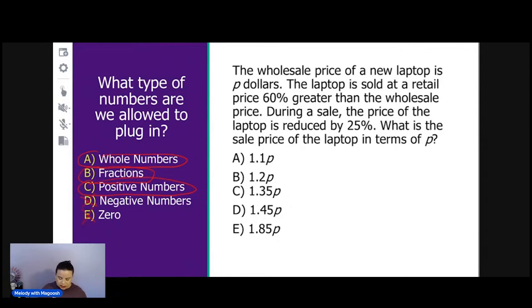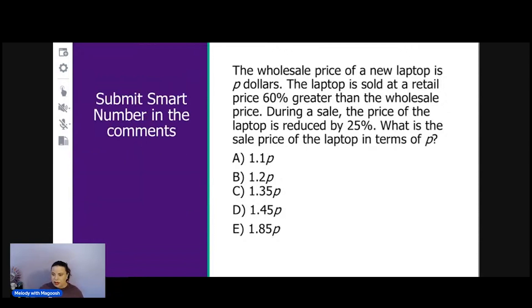But we want to pick a smart number. We want to pick a number that is going to make this problem easy for us to work with. There was a clue for what to choose when we work with percents. So take a moment and pick out what number you think would be a good idea to use. Since we're working with percents, a very convenient number to use would be a multiple of 100. In fact, I'm going to use 100 itself. So my smart number is going to be that p equals 100. That's the number I'm going to plug in. Remember, write that down on your scratch paper.